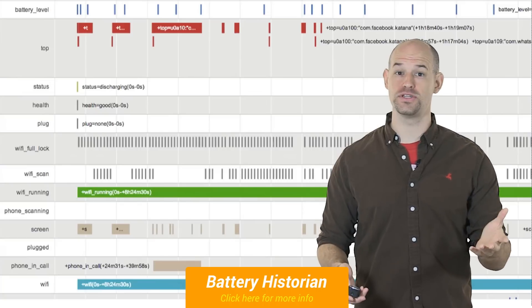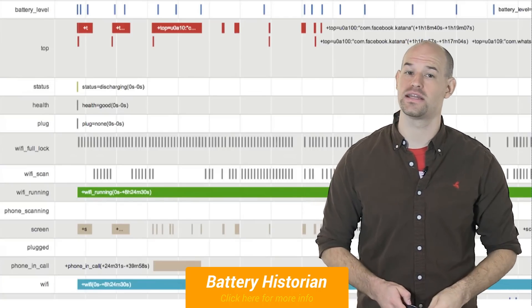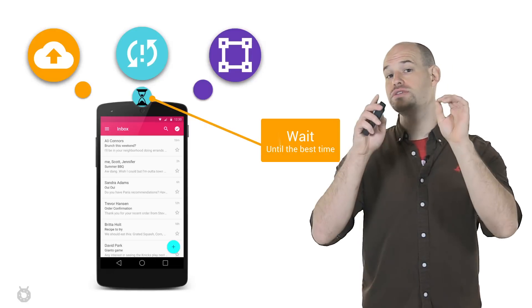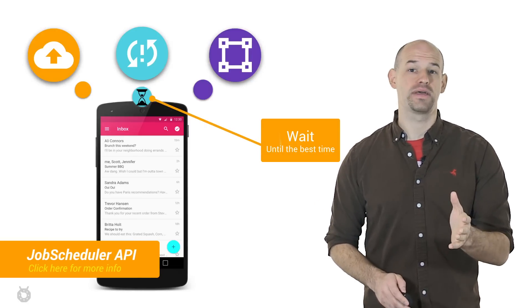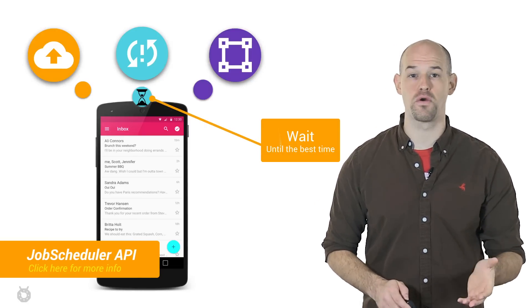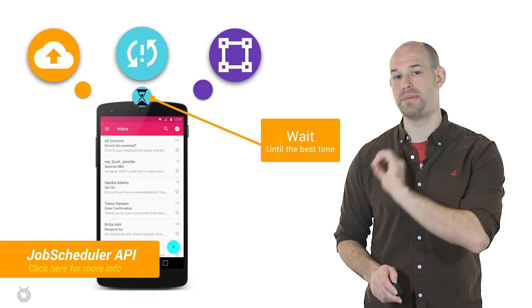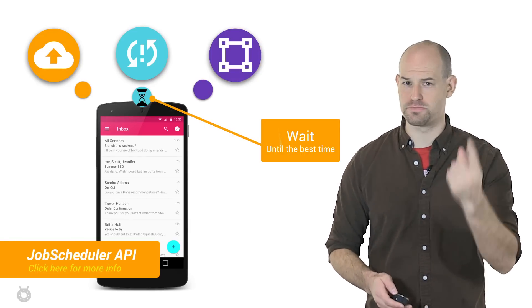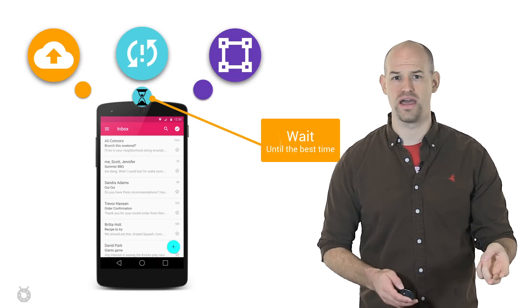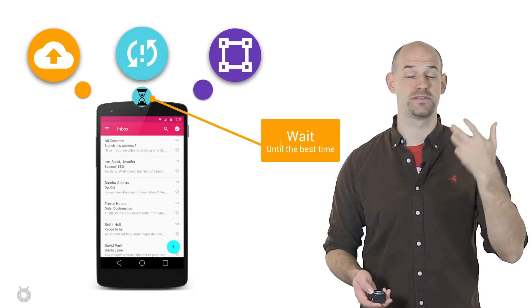And once you've found your app's issues, Android has several APIs that can help you fix them. For example, using the Job Scheduler API allows your application to defer various types of work to a time when the battery is better to be used, like when it's plugged in or when it's connected to Wi-Fi or the next time it wakes up the device intentionally.